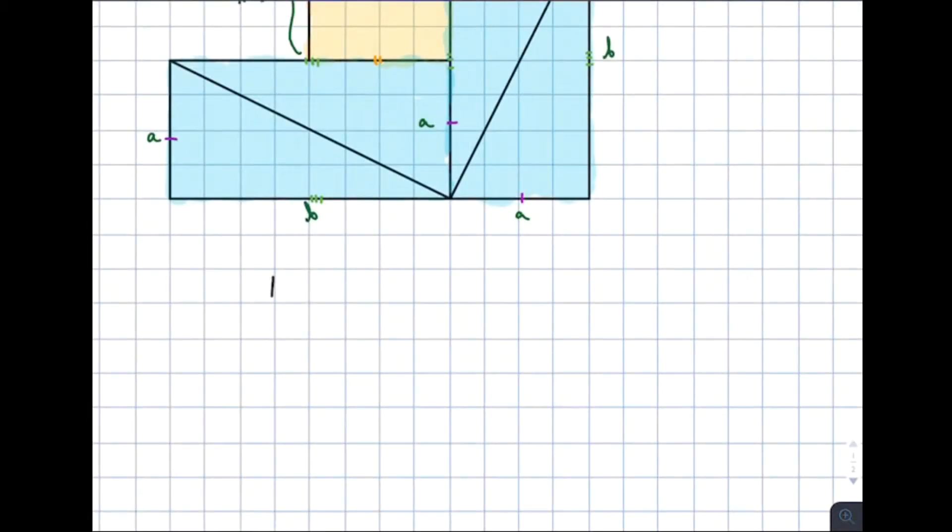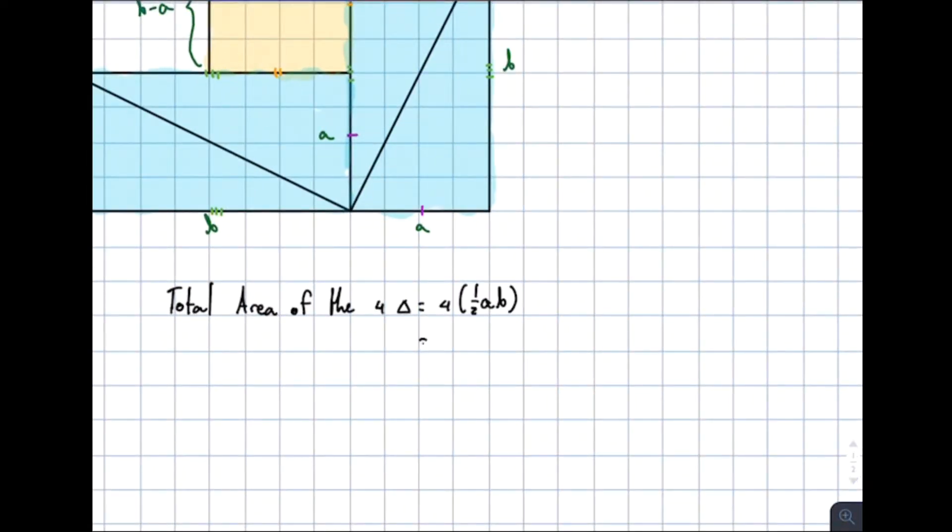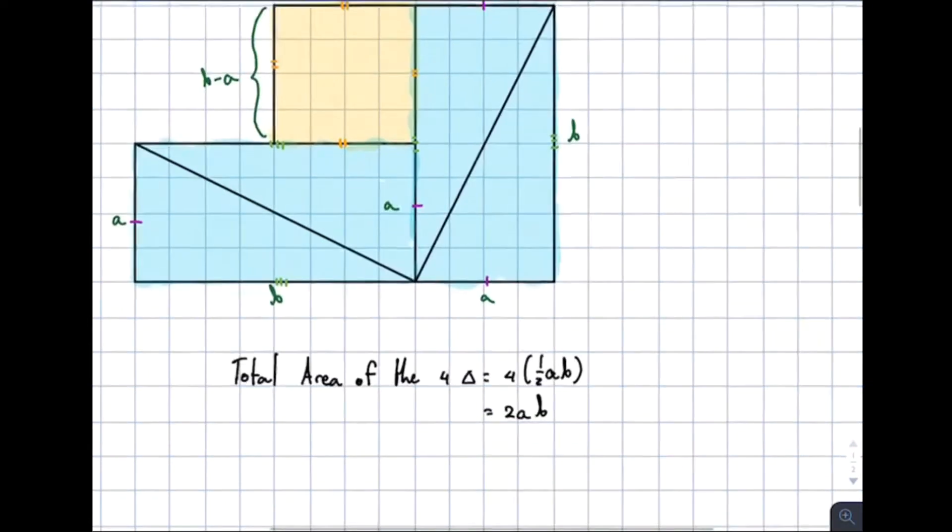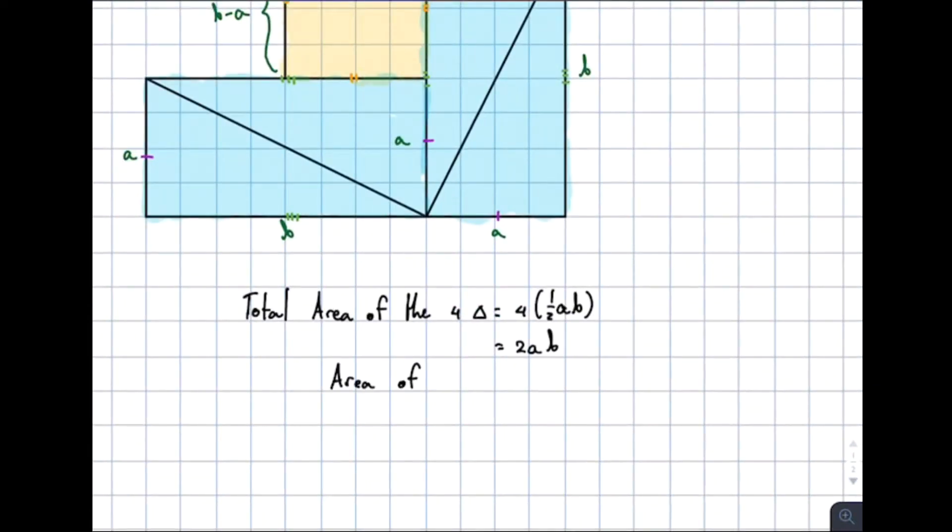The total area of this triangle is equal to 4 times 1 over 2ab, equal to 2ab. The area of the square that represented by yellow color is equal to b minus a power 2.